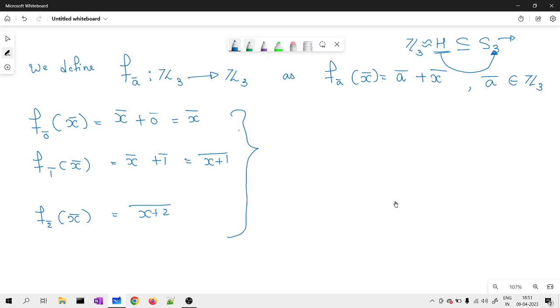What students can observe is all these three functions are bijective maps. You are not supposed to prove it because the way they are defined, they are going to work as bijective maps because they have the inverse. They are nothing but bijective maps on Z3 onto Z3.